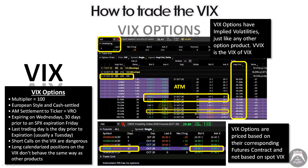The multiplier for VIX options is 100. So if you want to buy the 28 call trading for $3.20, you'd be spending around $320. VIX options are European style and cash settled — you cannot exercise them prior to expiration. When they expire, you don't receive a stock; you receive or pay cash. They have morning settlement to a special quote ticker VRO — similar to how SPX settles to the ticker SET on expiration morning.